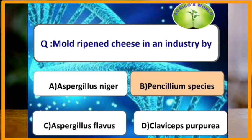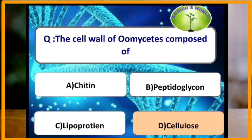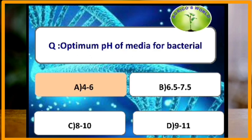Mold-ripened cheese in industry is produced using Penicillium. The cell wall of Oomycetes is composed of cellulose. The optimum pH of media for bacteria is 4 to 6.